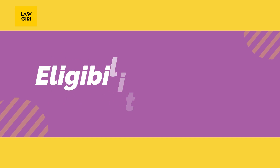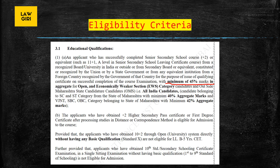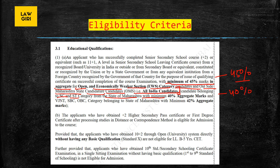Let's check the eligibility criteria. Minimum 45% marks in aggregate for open category, economically weaker section (EWS) category candidates, and outside Maharashtra state / all-India candidates. So if you belong to the open category from Maharashtra, all-India category, or EWS, 45% marks are required.